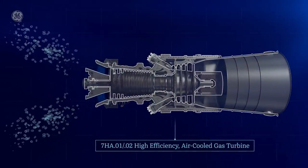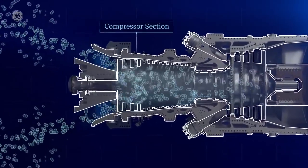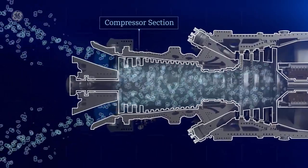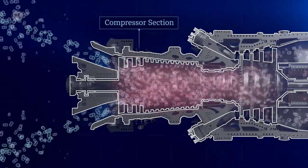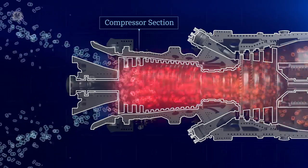First, air is drawn in through one end of the turbine. In the compressor section of the turbine, all those air molecules are squeezed together, similar to a bicycle pump squeezing air into a tire. As the air is squeezed, it gets hotter and the pressure increases.